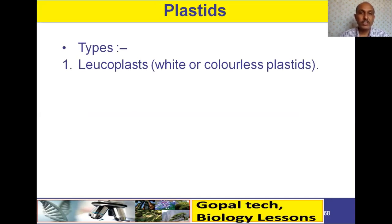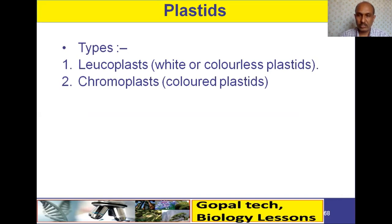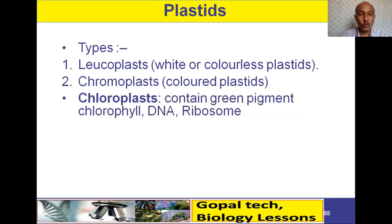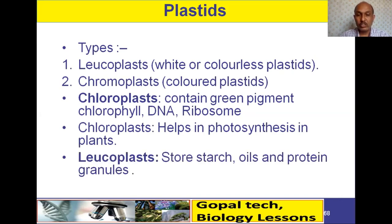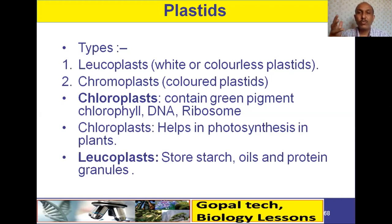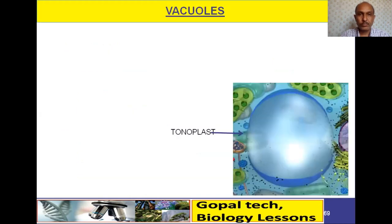Plastids are only found in plants. There are different kinds: leucoplasts are white or colorless; chromoplasts are colored. Within chromoplasts, chloroplasts contain the green pigment chlorophyll. Chloroplasts also contain their own DNA and ribosomes, like mitochondria. Chloroplasts help in photosynthesis. Leucoplasts help in storage of starch, oil, and protein granules. Chromoplasts attract pollinators and are generally found in flowers.